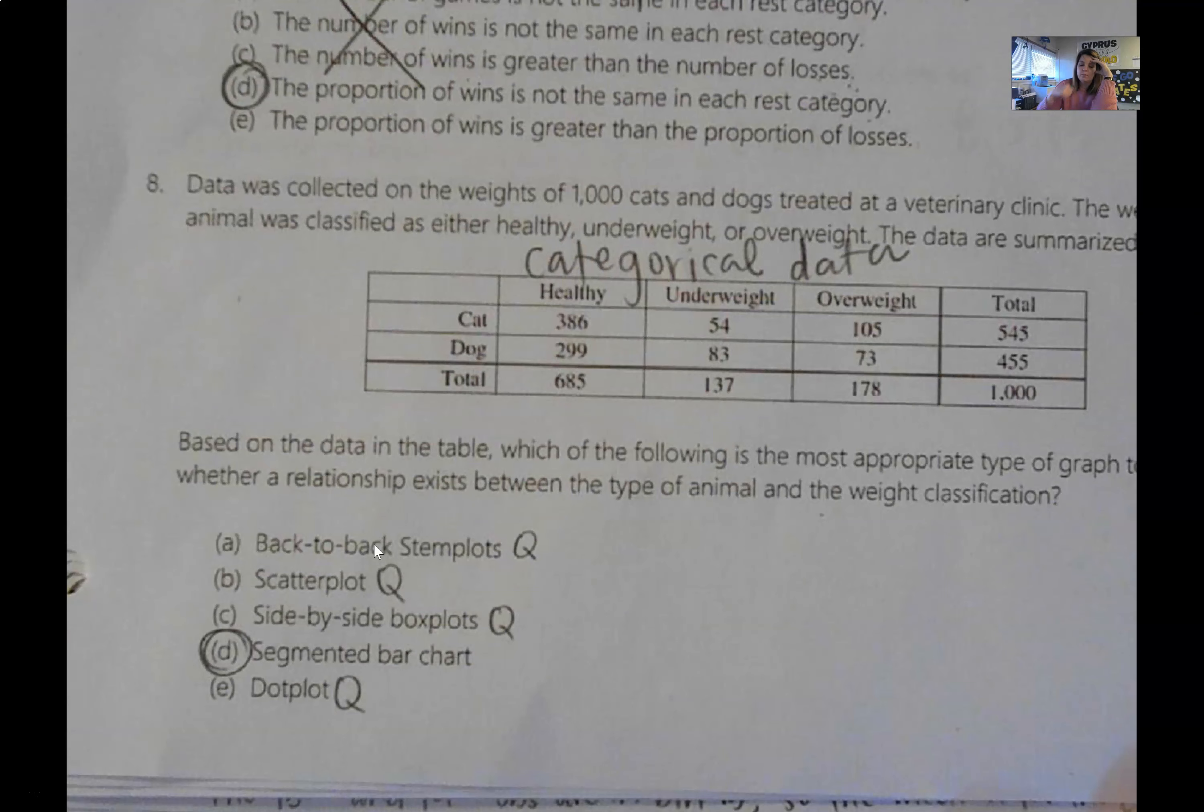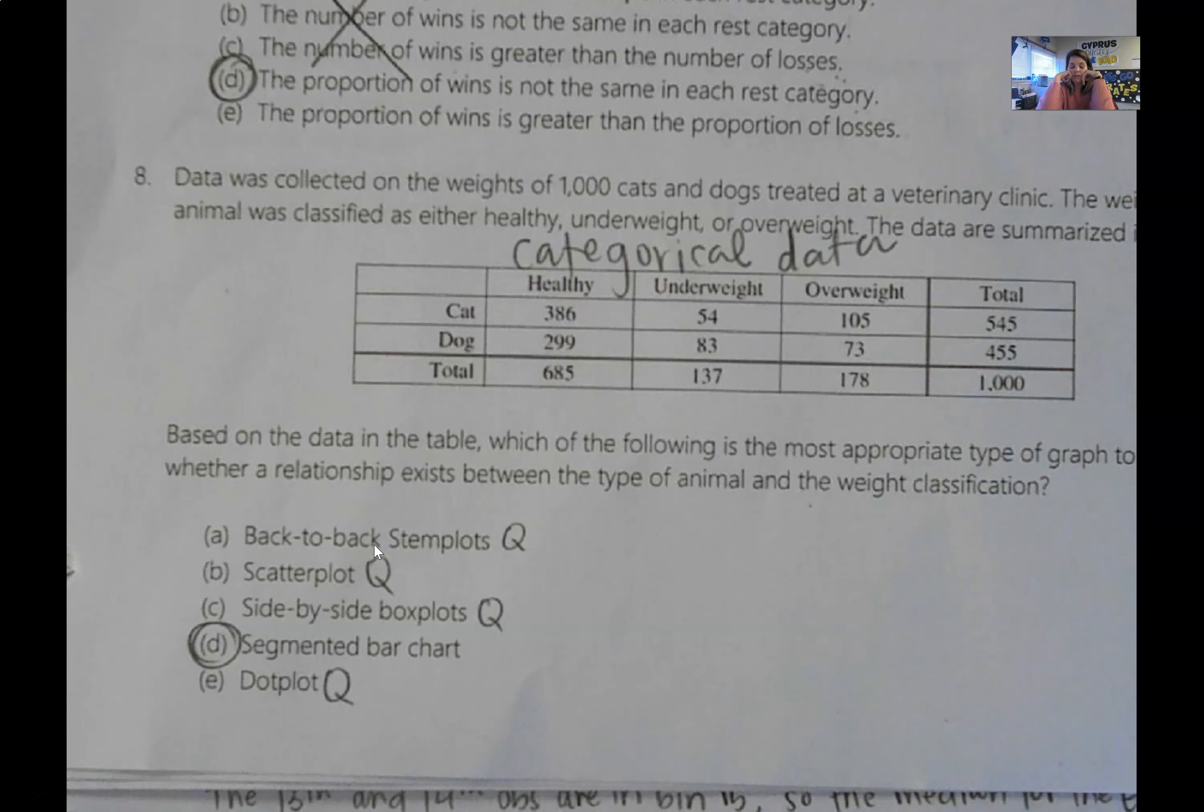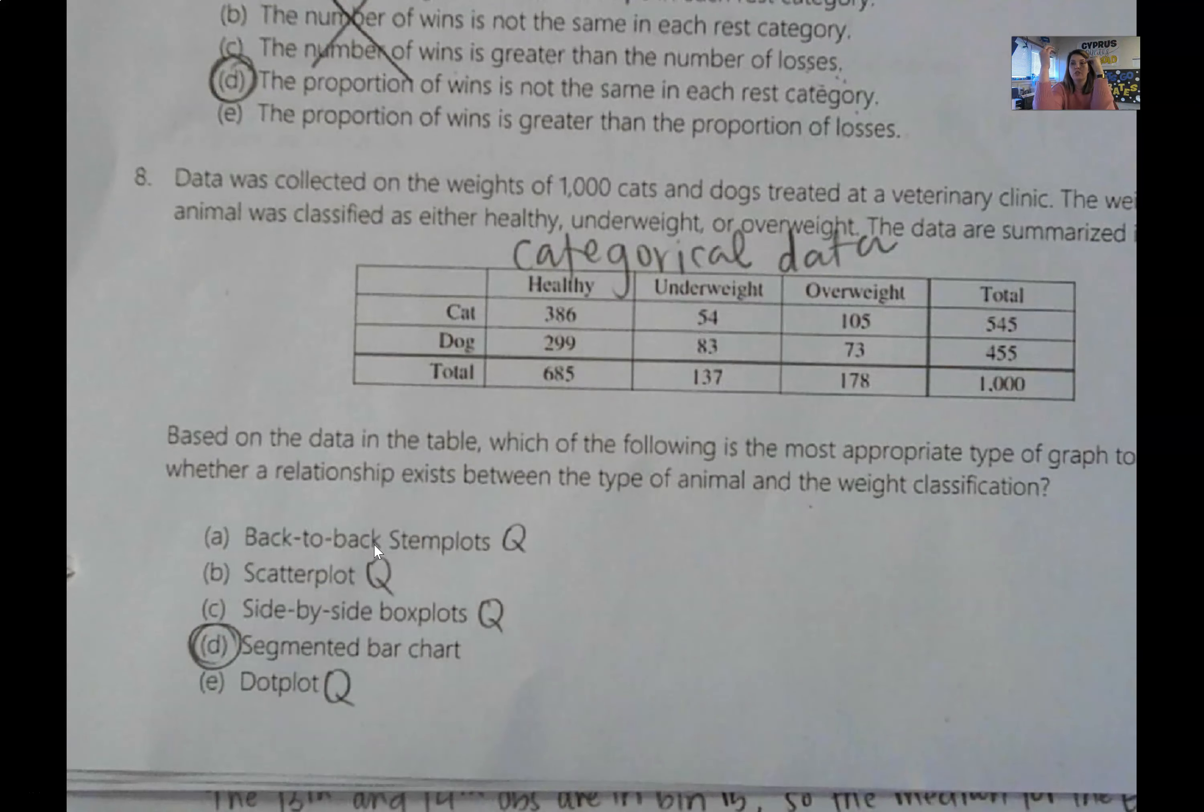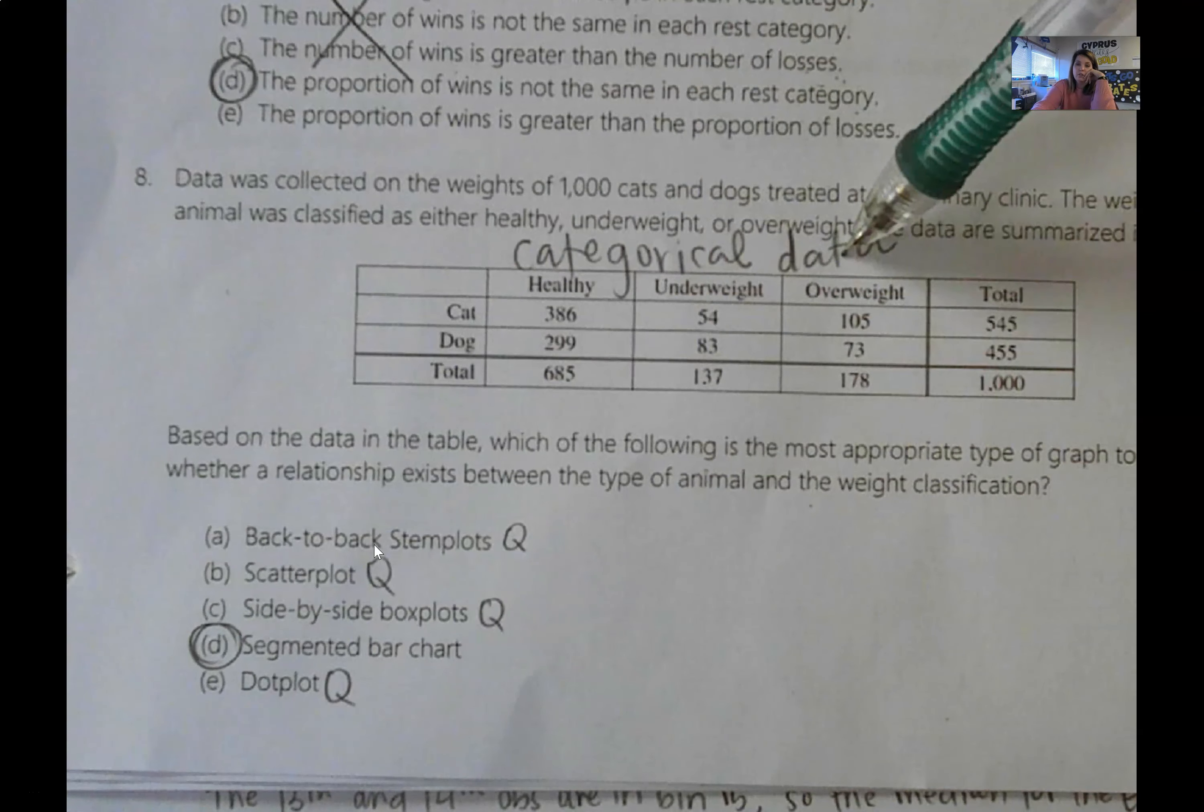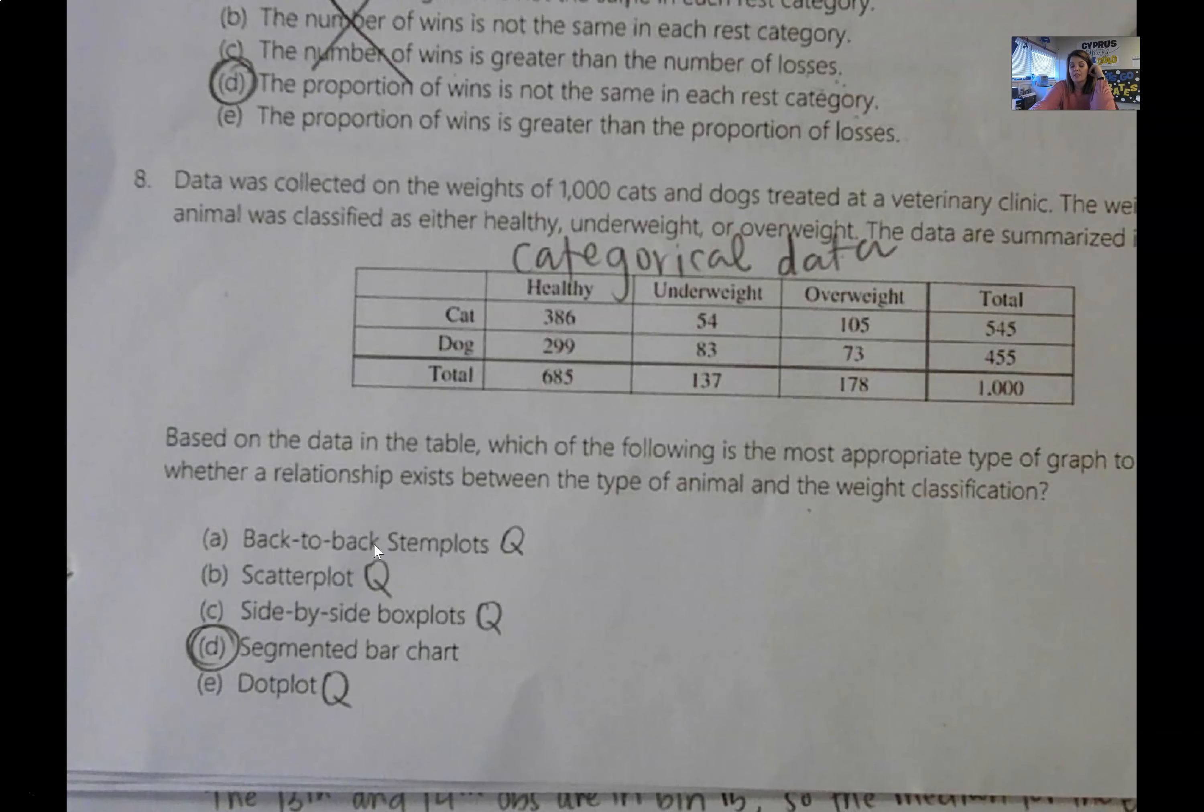Eight is another really important one. They're all really important, so I don't know why I distinguish one over the other, but you'll see something similar on your exam. So they give you a table, a two-way table, about cats and dogs. It doesn't even matter what the values in the table are. What they're trying to get you to recognize is you can only use certain graphs for categorical data and you can only use certain graphs for quantitative data. So they're trying to get you to recognize that this is categorical data and the only option here that can display categorical data is a bar chart. All of these other options are only graphs that you can use if you have quantitative data.